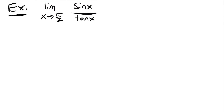Now we'll look at the limit as x approaches pi/2 of sine x divided by tangent x. This is different from what we've been looking at because x is approaching pi/2, not 0, so our special trig limits are off the table — you can only use them when x approaches 0. This example shows why you can't just reach for sine x over x every time you see sine without checking what x is approaching. Since pi/2 plugged into tangent x gives undefined, we need to manipulate.